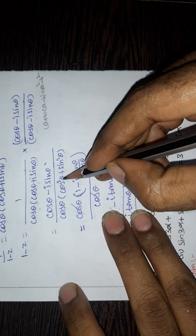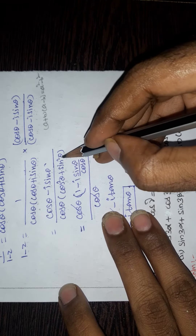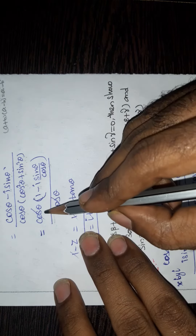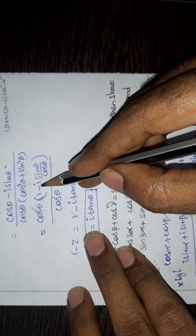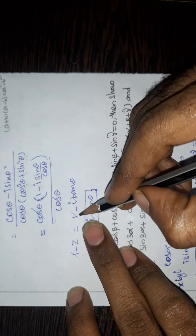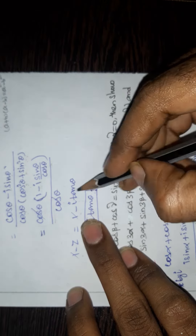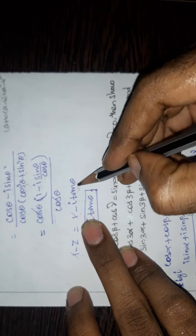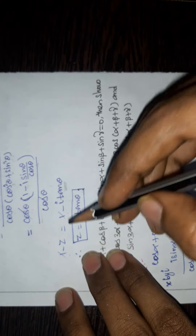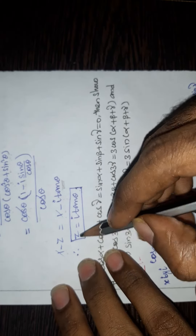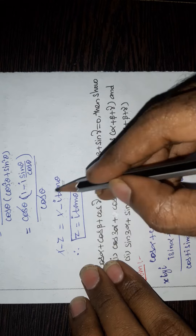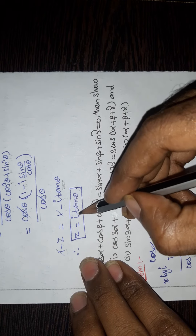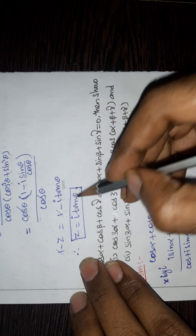Since cos²θ + sin²θ = 1, the cosθ terms cancel. Remaining: 1 - z = 1 - i·sinθ/cosθ = 1 - i·tanθ. The 1s cancel, multiplying both sides by -1 gives z = i·tanθ.